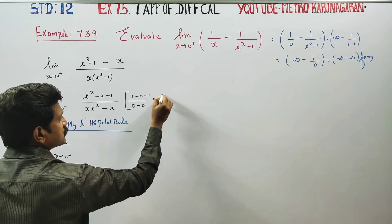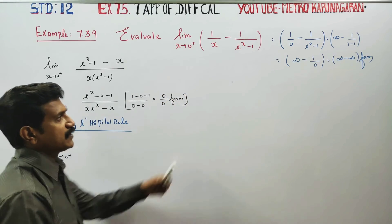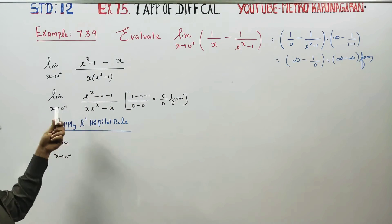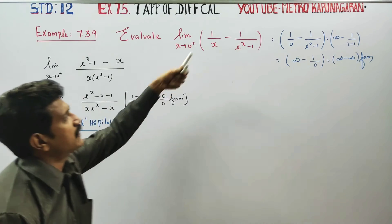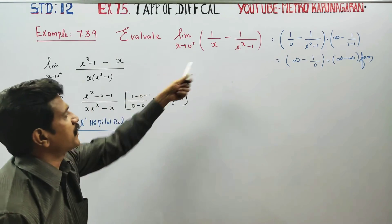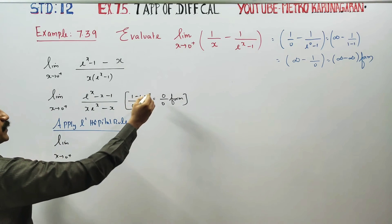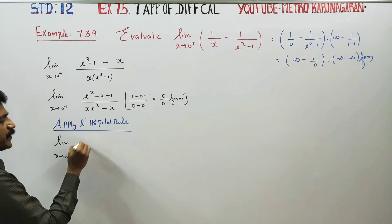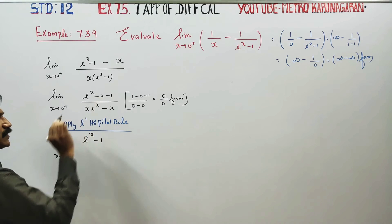This gives 0 by 0 form — which is still an indeterminate form. There is infinity minus infinity involved. If you want to simplify it, this is the same style of limit. If you apply it, you will get the answer. It is 0 by 0 form, so apply L'Hôpital's rule. Differentiate the numerator and denominator.